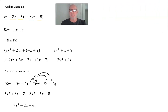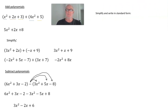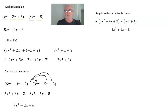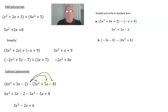Now simplify these polynomials and write them in standard form. First: (3x² + 4x + 2) − (−x + 4). Pause the presentation, figure out the answer, and then resume. The solution is −4x² − 4x + 6. Pause the presentation for the next problem, figure out the answer, and then resume. The solution is −4x² − 5x − 12.